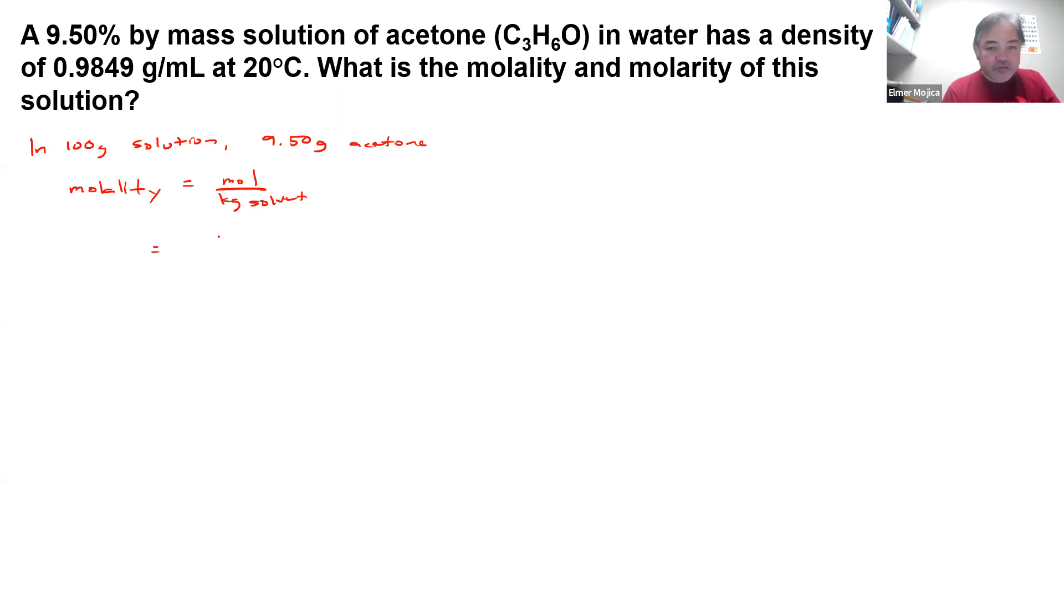We have 9.50 grams divided by the molar mass. You're going to get the molar mass of C3H6O, and that is around 58 grams per mL.